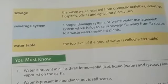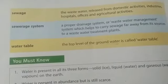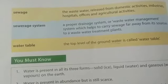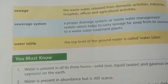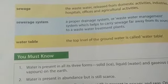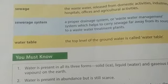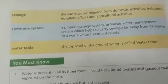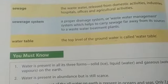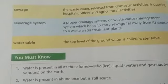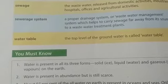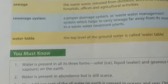Sewage system: a proper drainage system of waste water management which helps carry waste water far away from its sources to waste water treatment plants — through a network of pipes. After that, water table: the top level of ground water is said to be your water table.